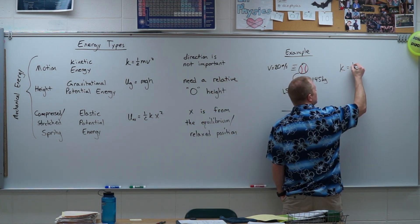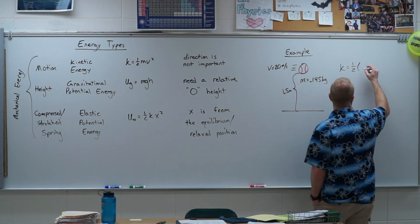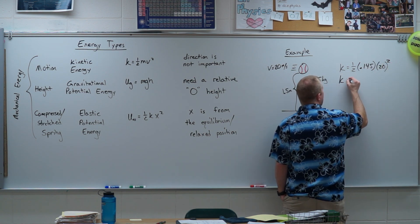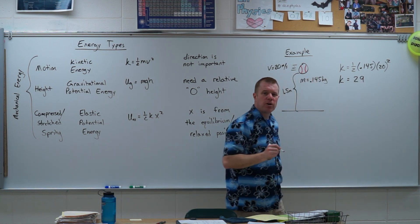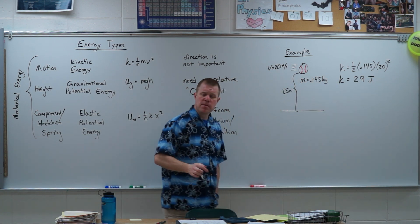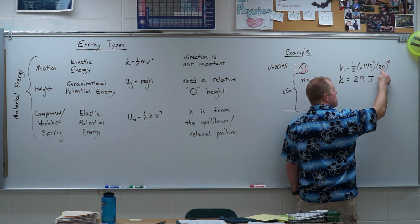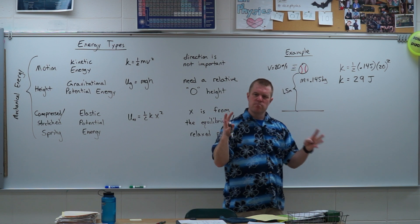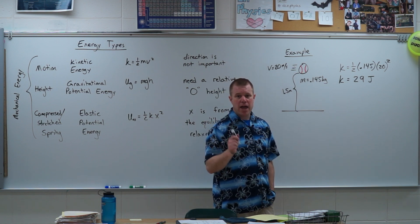Let's figure out how much kinetic energy it has. Kinetic energy is one-half the mass. The mass of a baseball is 0.145 kilograms, so 0.145 times the speed squared gives a kinetic energy of 29 joules. The correct unit for energy is joules. It might come out as newton-meters or kilogram meters squared over seconds squared, but we compress all those units together and call it a joule — J-O-U-L-E-S.